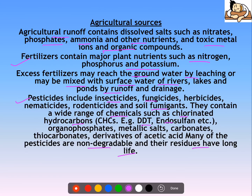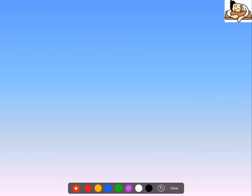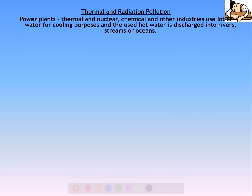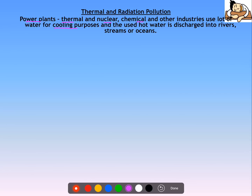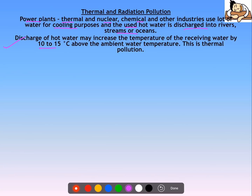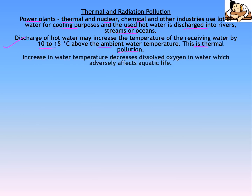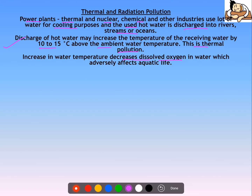Animal excreta can also be a source — they contain a lot of microbes and can cause many diseases. Next is thermal pollution. Power plants — thermal, nuclear, chemical, and other industries — use a large amount of water for cooling purposes. The used hot water is discharged into rivers, streams, or oceans, increasing the temperature of the receiving water by 10 to 15 degrees above ambient temperature. This is called thermal pollution, which also leads to decreased dissolved oxygen in water, adversely affecting aquatic life.